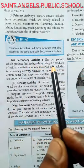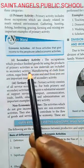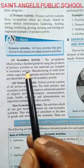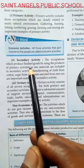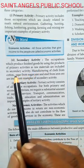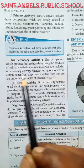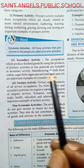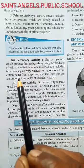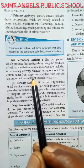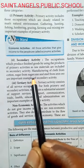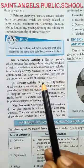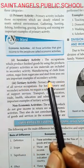इसके बाद आती है secondary activity. The occupations which produce finished goods by using the products of primary activities as raw material are included in secondary activities. वो सारे काम जिनमें हम primary activity से मिलने वाले सामानों को कच्चे माल के तौर पर इस्तेमाल करते हैं और उनसे तैयार माल बनाते हैं। For example: manufacturing of cloth from cotton, sugar from sugar cane, and steel from iron ore are important examples of secondary activity.